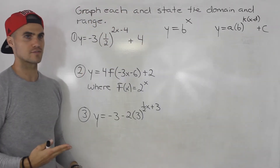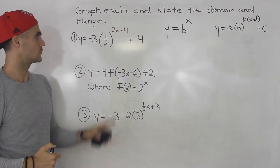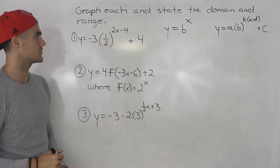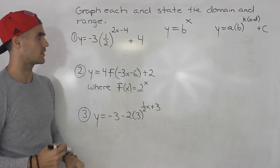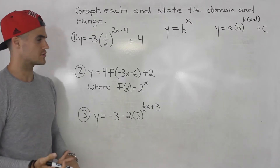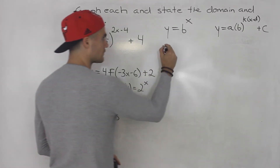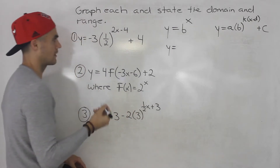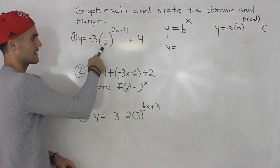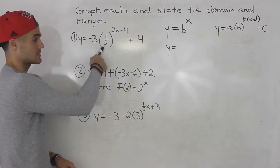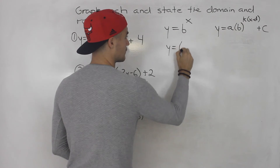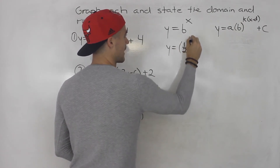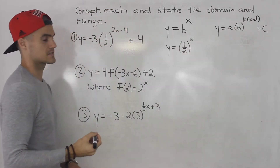Let's start by graphing number one: y equals negative three times one half to the power of two x minus four, plus four. The first step is to figure out the base. In this case the base is one half, so the parent function is one half to the power of x.